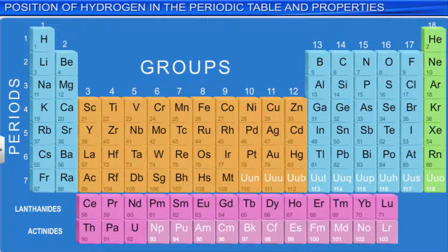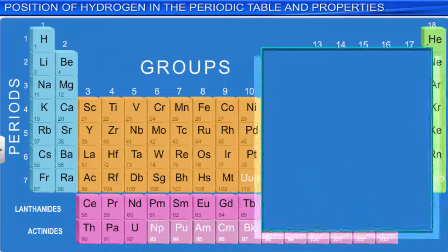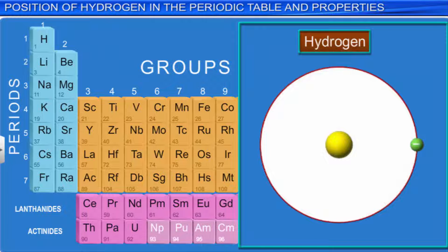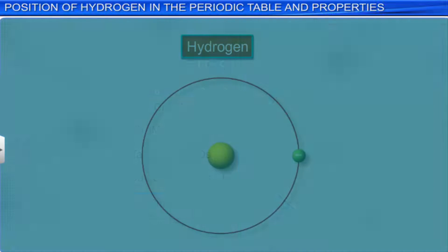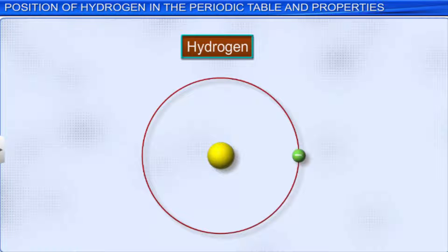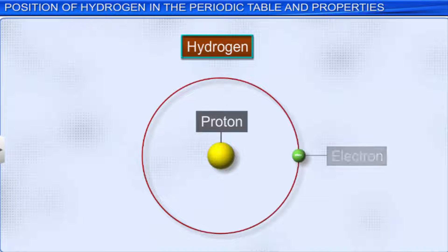In the periodic table, the elements are arranged in increasing order of their atomic numbers. Hydrogen, with atomic number 1, is the first element and has the simplest atomic structure of all the elements. The nucleus of a hydrogen atom contains one proton but no neutrons. It has only one electron in the K-shell, which is the outermost orbit of the atom.